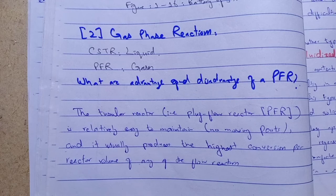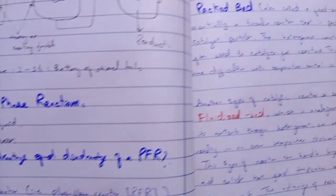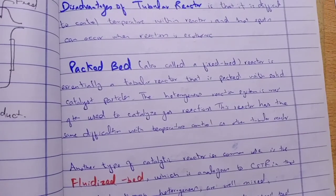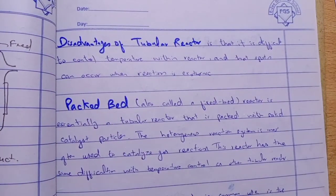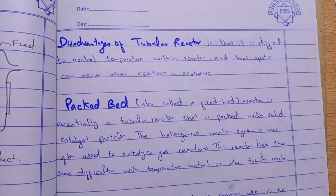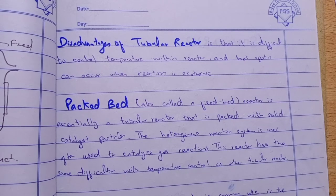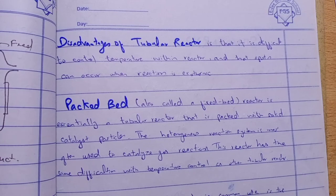The disadvantage of PFR and the tubular reactor is that it is difficult to control temperature within the reactor, and hot spots can occur when the reaction is exothermic. This is the main disadvantage of the tubular reactor.